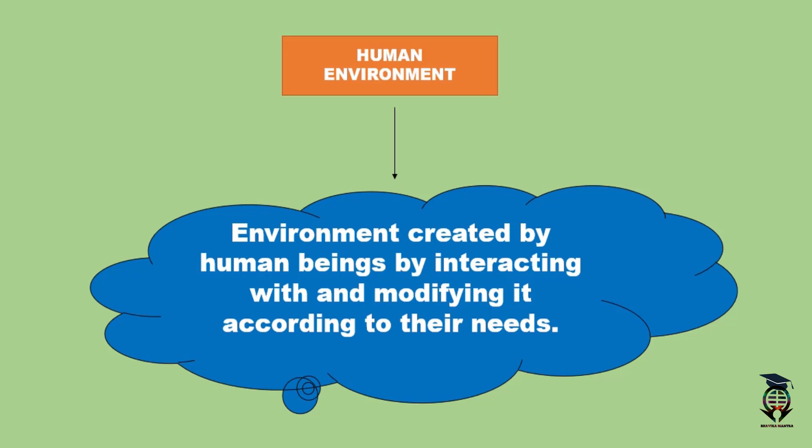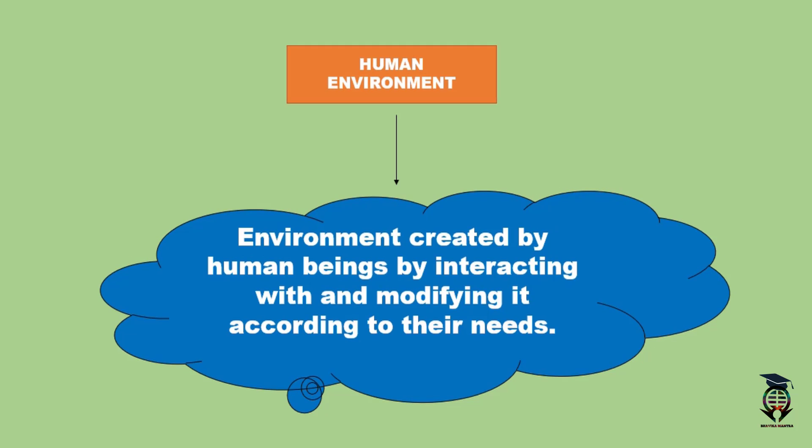Human environment refers to the environment created by human beings by interacting with and modifying it according to their needs. It is the environment that humans create themselves for their own living so they can satisfy and fulfill their needs. We also call it artificial environment, because it is created through the actions and efforts of humans themselves.